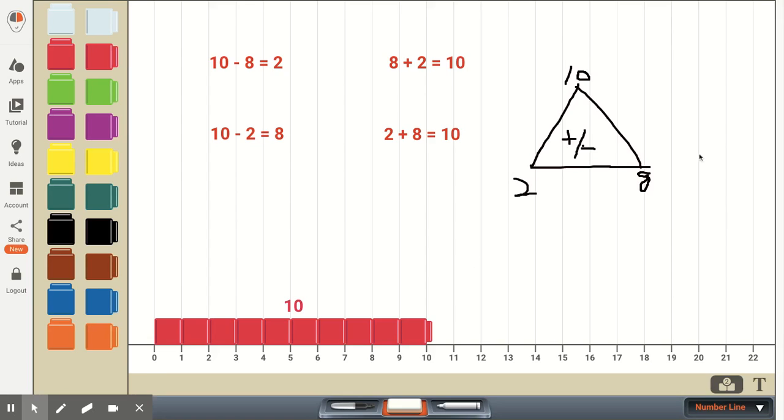Some first graders may use this triangle to help them come up with the fact family. So they might be placing the 10 at the top, and the 2 and the 8, and then they can see that they start with 10 and they subtract 2, they're going to get 8.